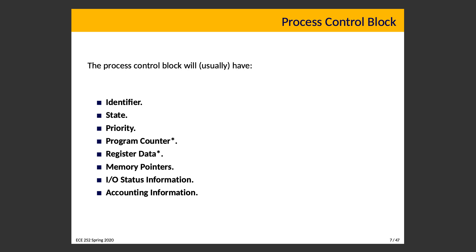A process control block will usually contain the following fields. It has an identifier — a unique ID associated with the process, usually a simple integer. It will be incremented when a new process is created and reset when the system is rebooted. In Unix, that identifier is just a simple integer. They can eventually get reused, but two processes can't have the same identifier at the same time.